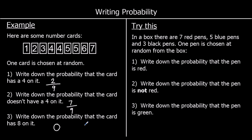One for you to try. In a box there are 7 red pens, 5 blue pens and 3 black pens. A pen is chosen at random. Write down the probability that it's red. There are 7 red, out of 15 in total (7 + 5 + 3 = 15). So the probability is 7 fifteenths. What's the probability that it's not red? 7 fifteenths and the rest must add up to 1, so that's 8 fifteenths. Write down the probability that it's green — there are no green pens, so the probability is 0.